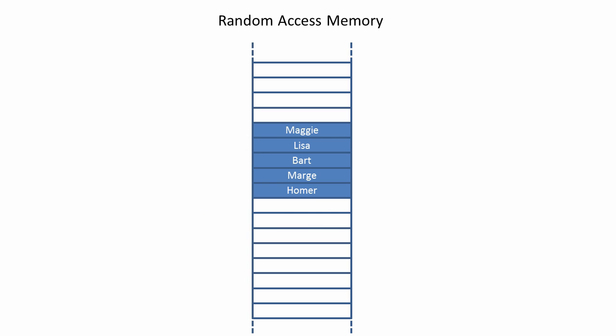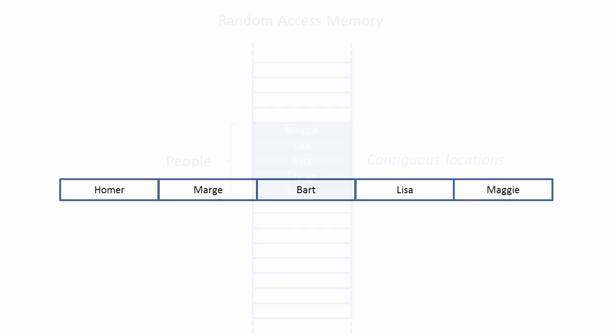An array variable is a named group of contiguous memory locations. Contiguous means that they are located next to each other. From a programmer's perspective, a one-dimensional array is a list. An array contains a number of elements into which items of data can be placed. Each element has an index number.